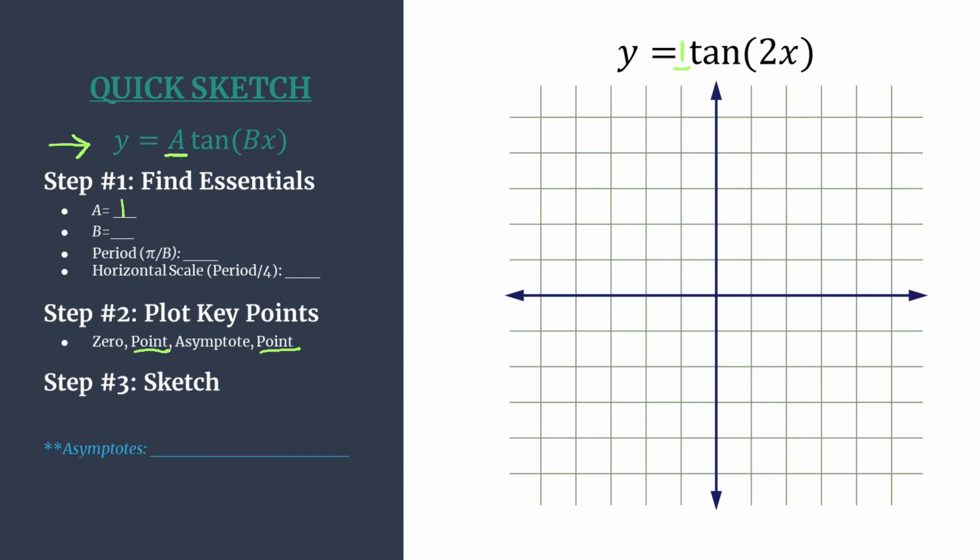So we'll come back to that. B is the coefficient in front of x. In our equation it's a 2 and we're going to use that to calculate the period or the length of a cycle horizontally. And for tangent remember that formula is just pi divided by B. So our period for this equation is pi over 2.